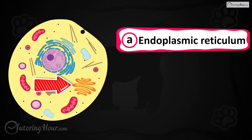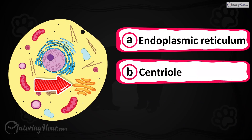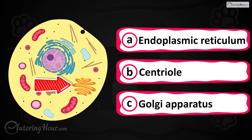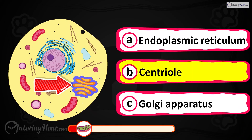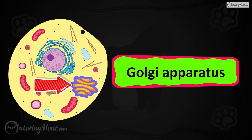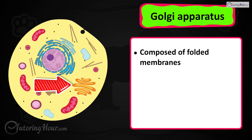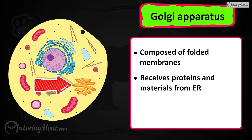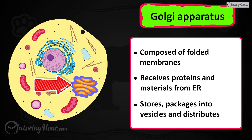Can you identify the highlighted part in the cell? Is it A) endoplasmic reticulum, B) centriole, or C) Golgi apparatus? The correct answer is the Golgi apparatus. It is composed of folded membranes. It receives proteins and materials from the ER, stores or packages them into vesicles, and distributes them to targeted destinations.